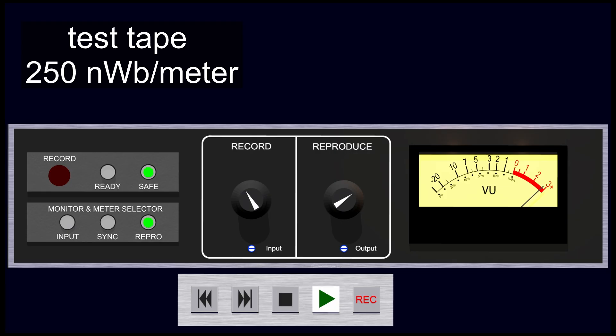For professional machines, the most common test tape is 250 nanowebers per meter. With this tape, it's easy to do a plus 3, plus 6, and plus 9 alignment. This tape is already recorded 3 dB hotter than 185 nanowebers per meter. So using this tape, if you want to record alignment to be plus 3 above 185 nanowebers per meter, you would set your playback level to 0, because this tape is already recorded 3 dB hotter.